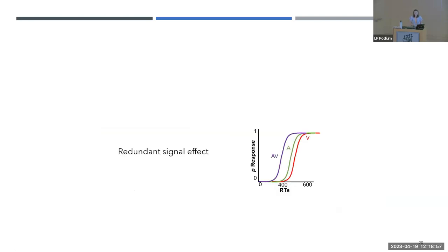In terms of reaction times, you have two independent signals — visual and auditory — each with their own reaction time represented as a cumulative distribution function. The bimodal stimulation is always faster than unimodal, regardless of the participant group. This is called the redundant signal effect. However, to study multi-sensory integration, this redundant signal effect alone is not sufficient.